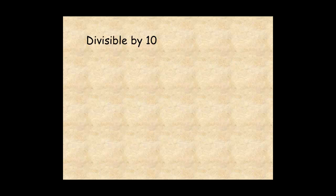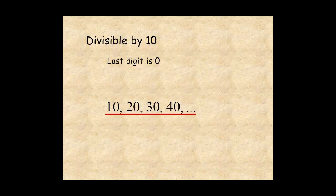Finally, a number is divisible by 10 if the last digit of the number is 0. You probably know this one already. If you count by 10s, you can see 10, 20, 30, 40 are all multiples of 10, so they're divisible by 10.